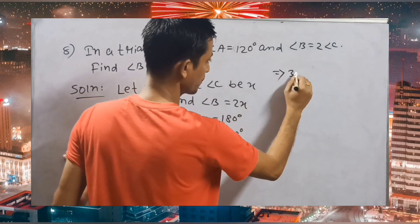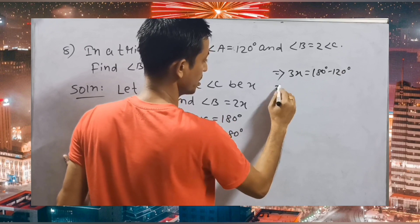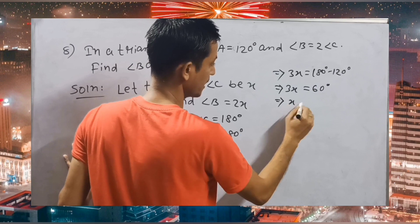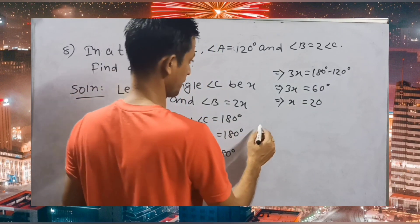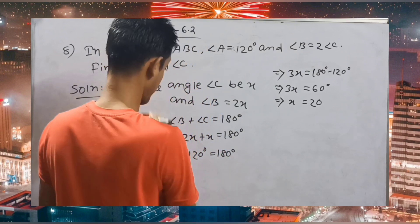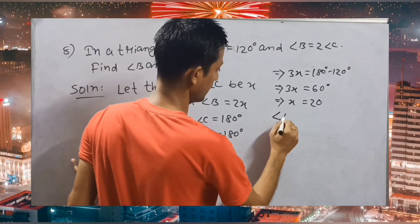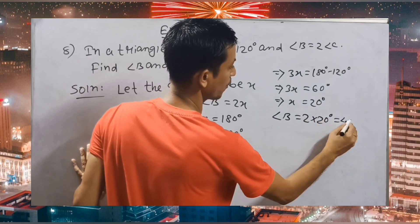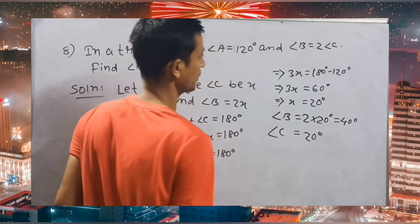So, 3x equals 180 degrees minus 120 degrees. Therefore, 3x is equal to 60 degrees, and x is equal to 20 degrees. That means angle B equals 2x, which is 2 into 20, that is 40 degrees. Angle C is only x, that is 20 degrees.